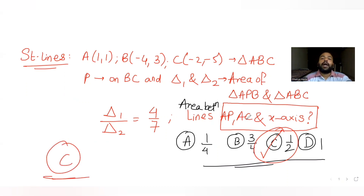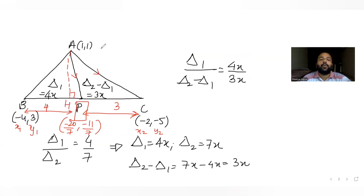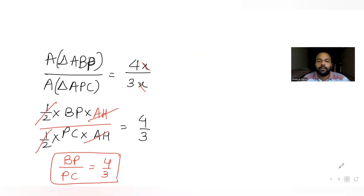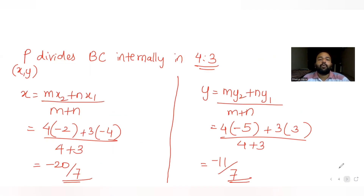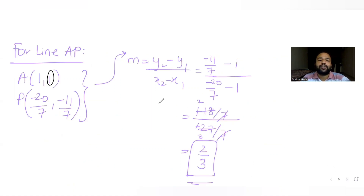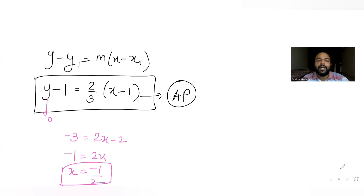So the answer is 1/2, which matches option C. To summarize: given vertices A, B, C, we found P divides BC internally in ratio 4:3 using the area ratio condition. We then used the section formula to get P's coordinates, found equations of lines AP and AC, and computed the enclosed area.